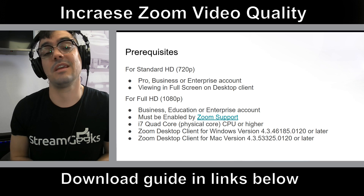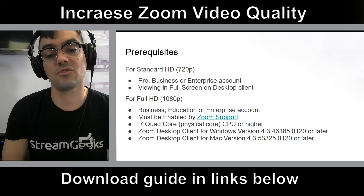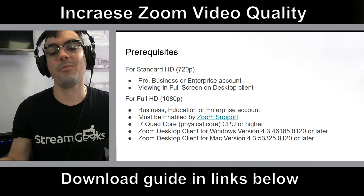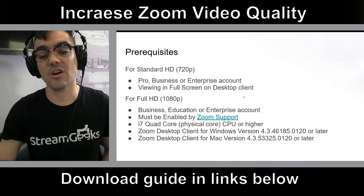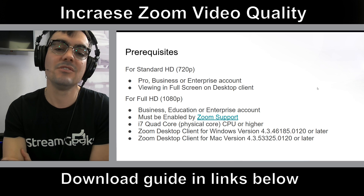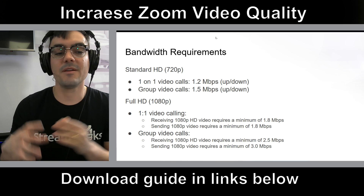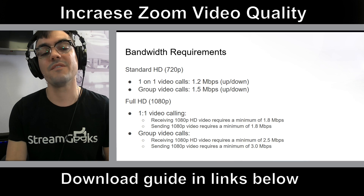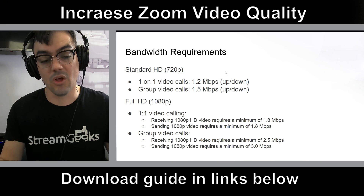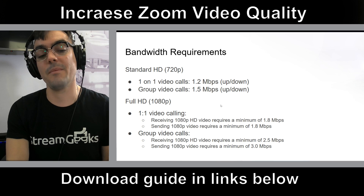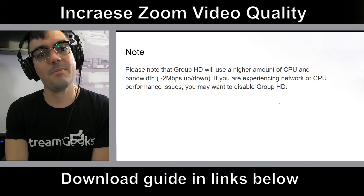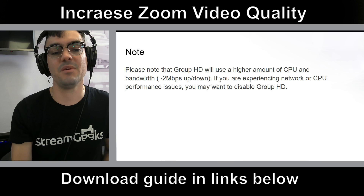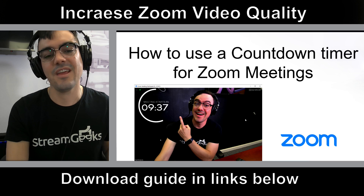There are a few prerequisites: you need a paid account to get 720p, you need to be viewing in full screen, and you need to be on a desktop client. For 1080p, it needs to be enabled with Zoom support, you need an i7 computer or greater, and the latest Zoom client. On bandwidth: 1.2 megabits per second up and down for one-to-one calls, 1.5 for larger groups, and for full HD 1080p it can go up to 3 megabits per second. Zoom notes this uses higher CPU and bandwidth, but the video quality is worth it.